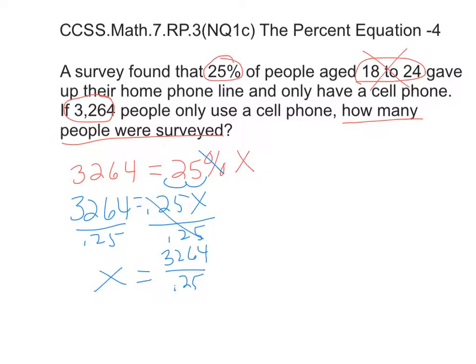Just like the other problem, we're going to show most of the work up here. So 3,264 divided by 0.25. Stop, drop, divide. 3,264. When we do that, we're going to multiply by 100 because you can't have a decimal out here. So multiply by 100 and multiply this by 100.